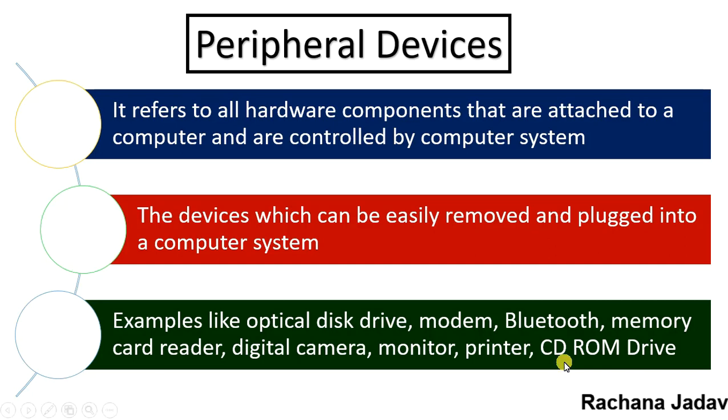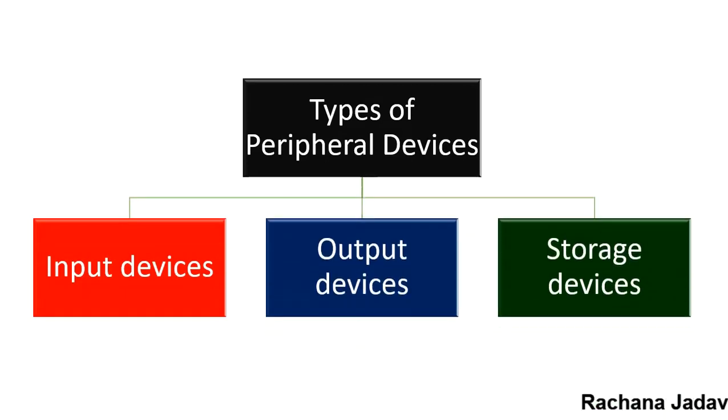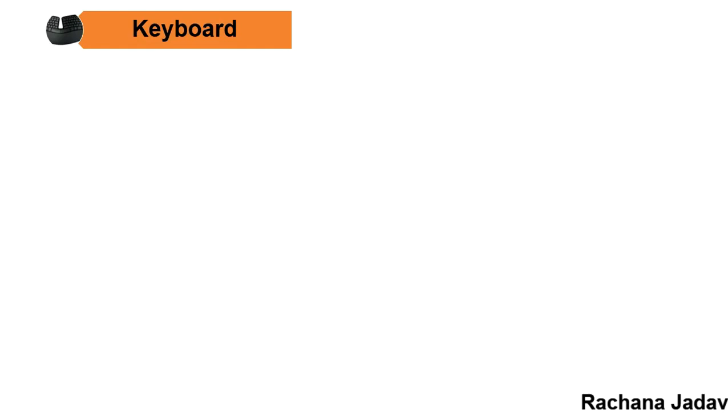The types of peripheral devices are input device, output device, and storage device. First, the keyboard — you can now get ergonomic keyboards designed according to your hand movements and way of typing. The keyboard is an input device used to enter data and information. Next is the mouse, which is a pointing device that everyone knows, and it also has a scroll function.